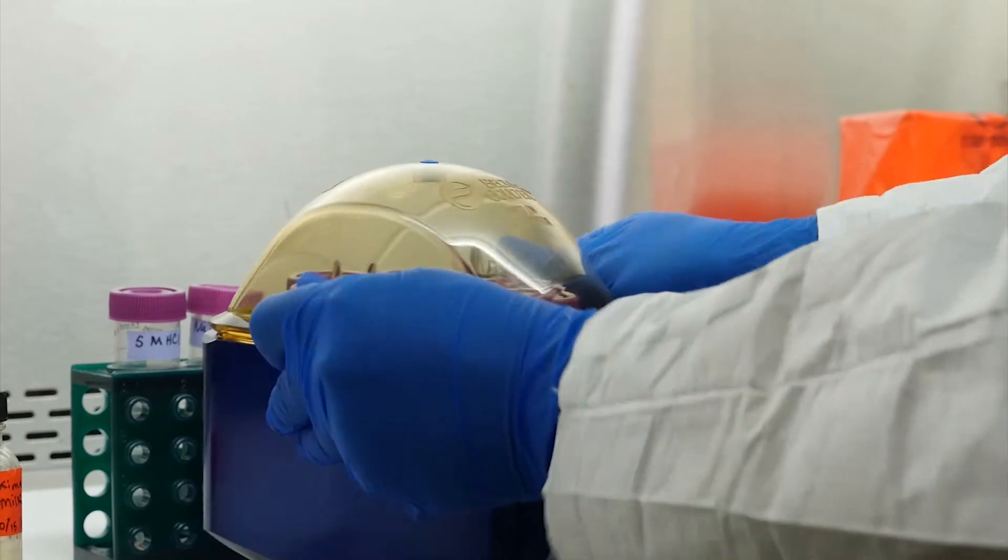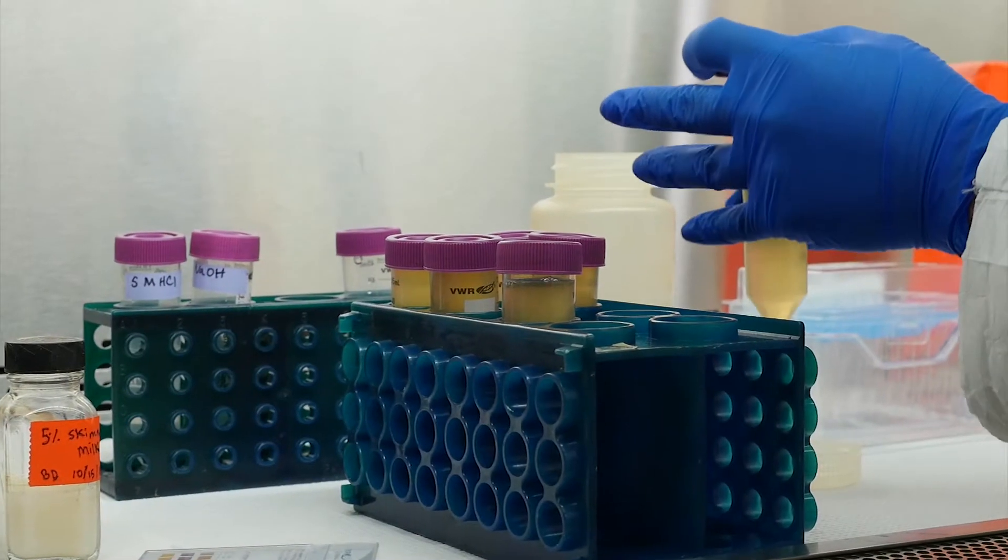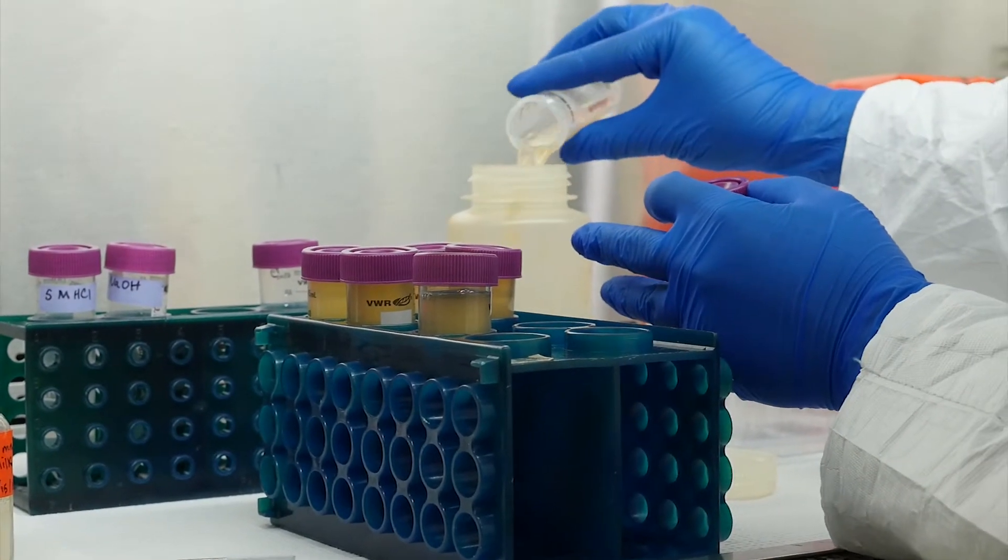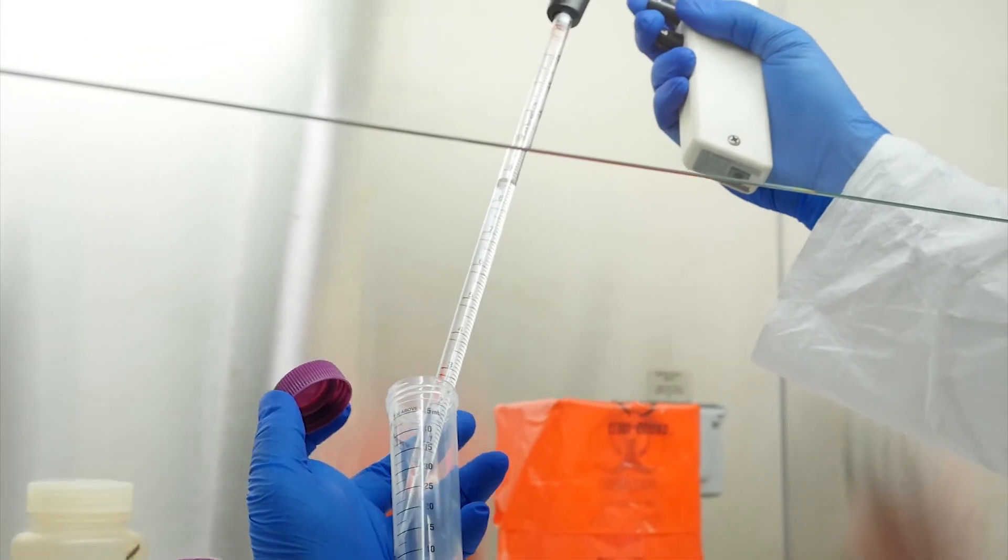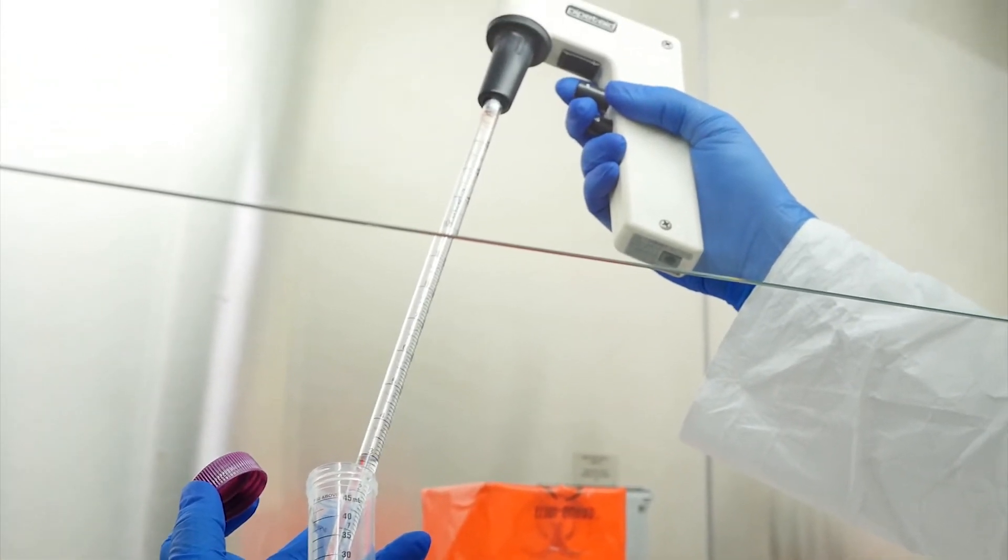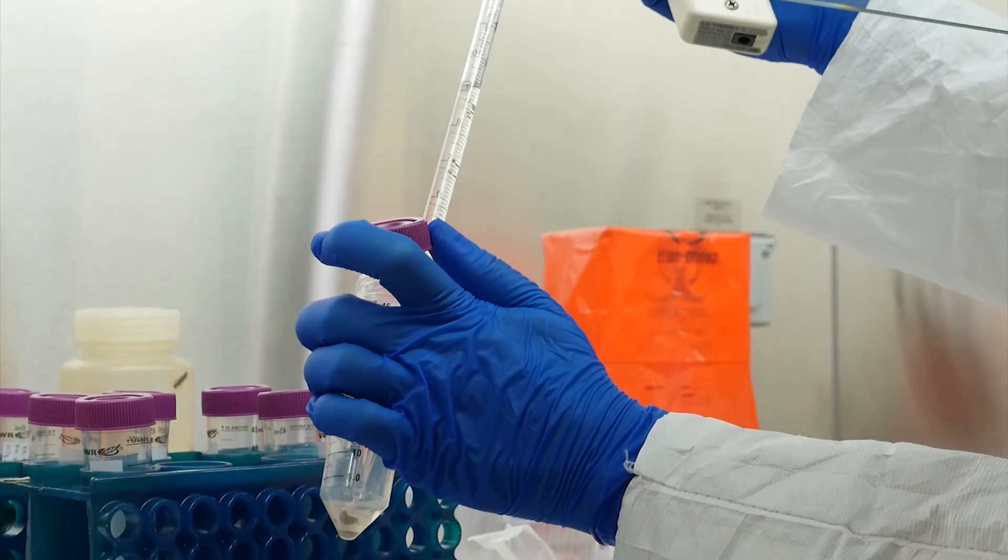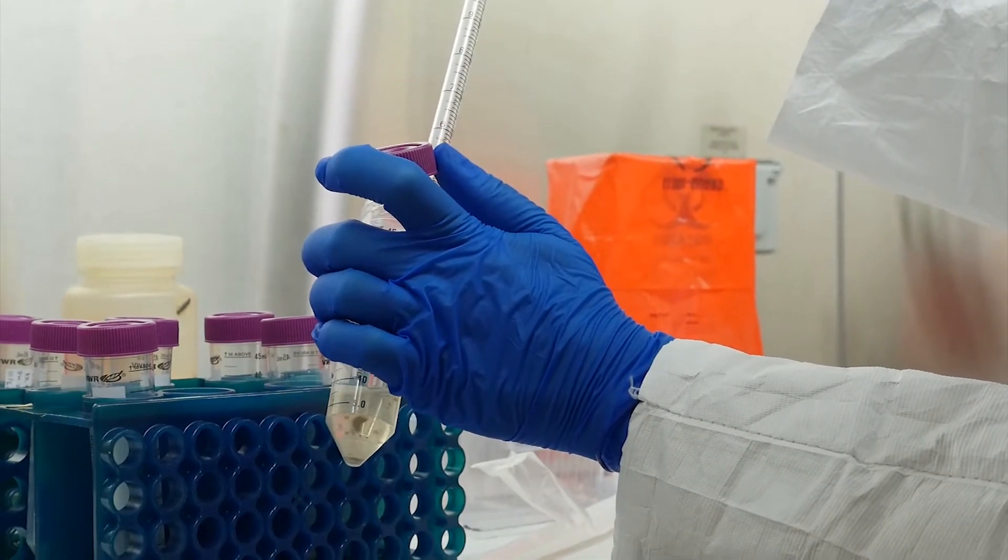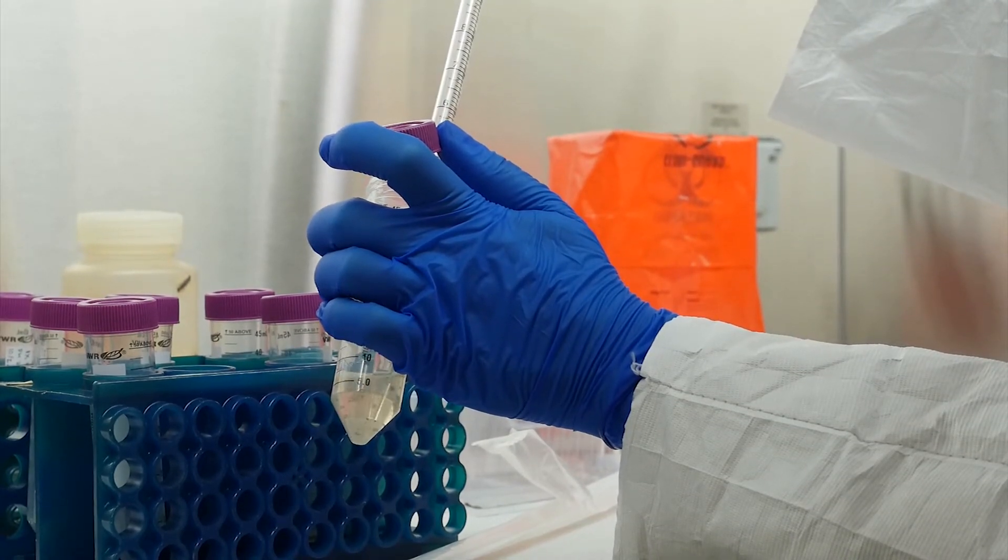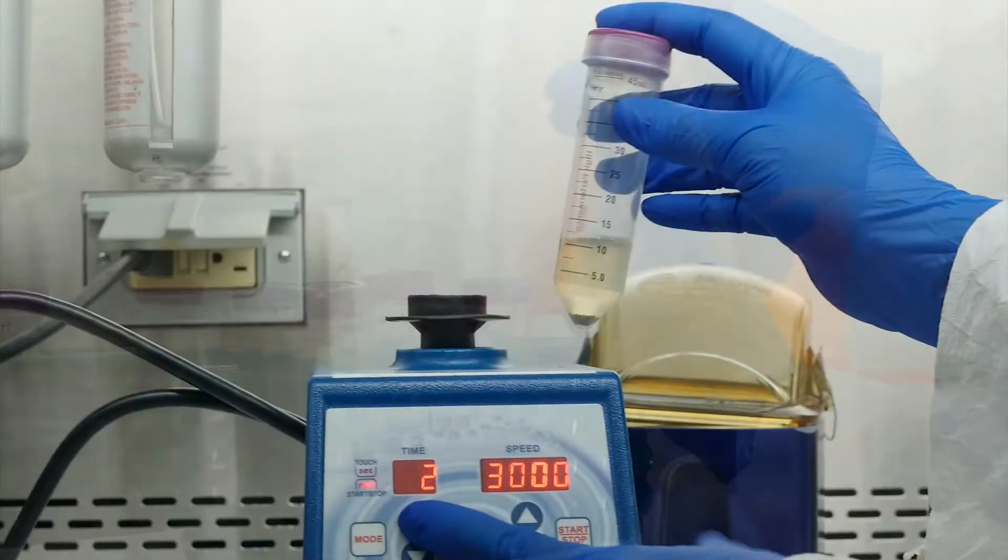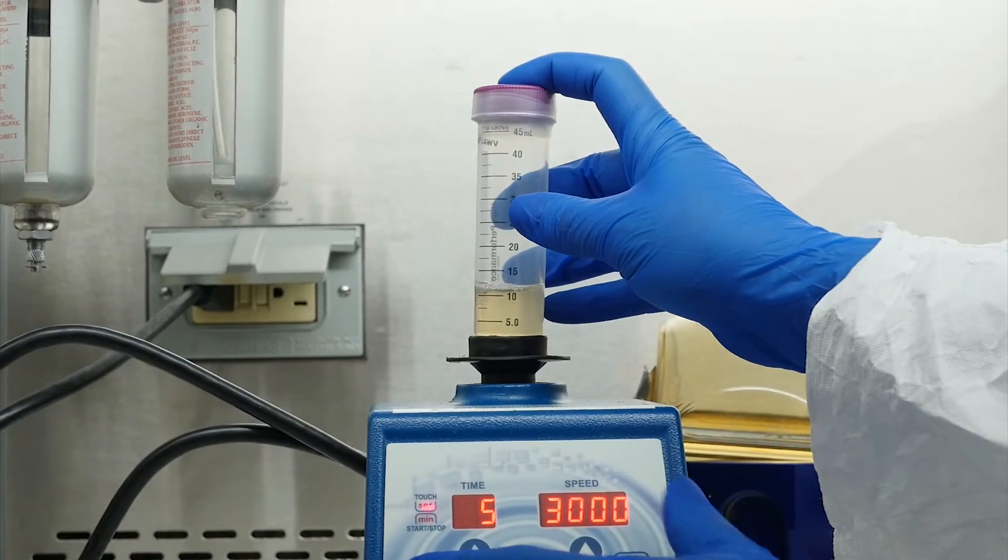After centrifugation is complete, return the sample to the biosafety cabinet. Discard the supernatant into the original sample bottle. Add 10 milliliters of sterile phosphate buffered saline to the pellet. If your sample is divided into multiple conicals, transfer the pellet between conicals so that all the pellets are resuspended into the same 10 milliliter volume. Parafilm the sample and vortex 5 to 10 minutes at maximum speed to completely resuspend the pellet.